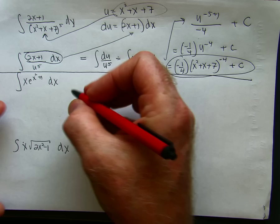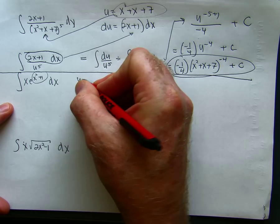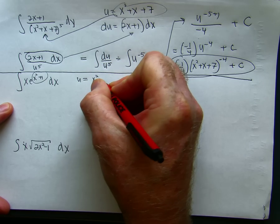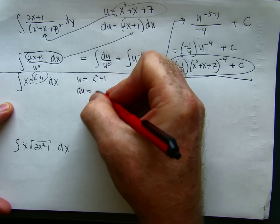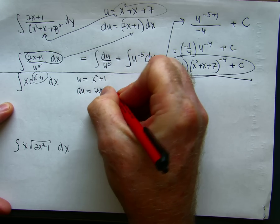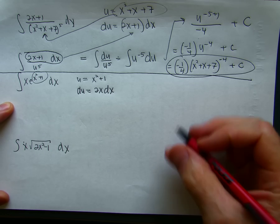Same thing over here. u is the exponent. du is going to be 2x dx. And now I start working.